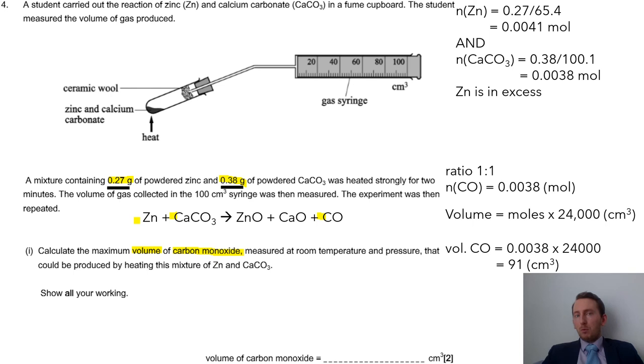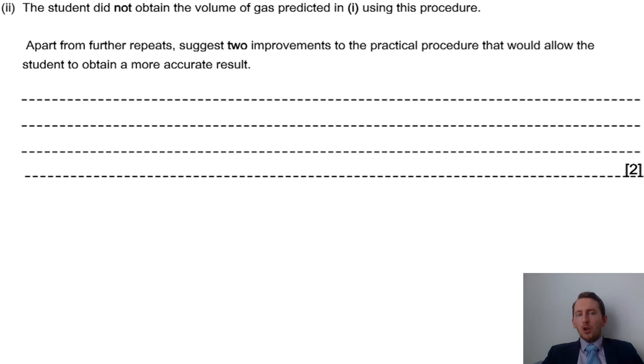That first mark I think a lot of people would get. It's the second mark where people would fall down a little bit. But hopefully that makes sense. Sometimes you get given the equation, sometimes you don't. That's why if you're not given it, putting equations together people can find a little bit tricky. But you know what you're starting with, you know one of the products, so hopefully you can put these ones together. Two marks, quite a bit to get two marks there.